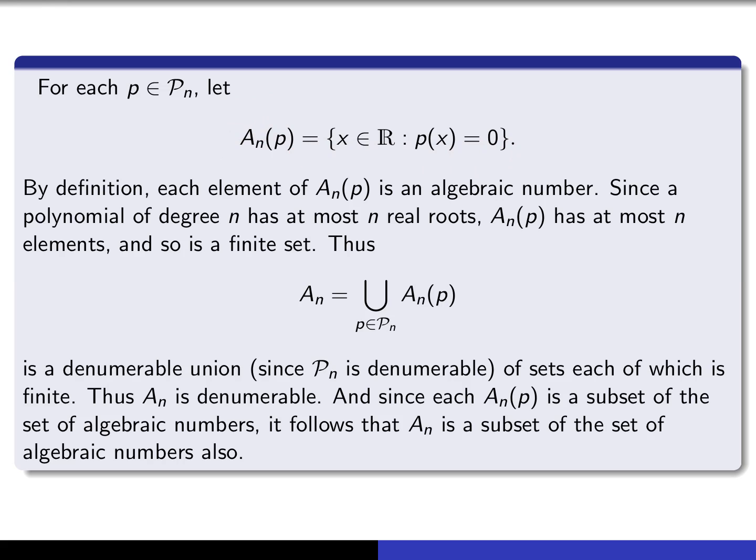A_n is either denumerable or finite, but it's easy to convince yourself it has infinitely many elements — for example, it contains all of the integers — so it cannot be finite. Therefore A_n is denumerable. Since each A_n(p) consists of roots of polynomials with integer coefficients, each A_n(p) is a subset of the set of algebraic numbers, and therefore the union A_n is also a subset of the set of algebraic numbers.